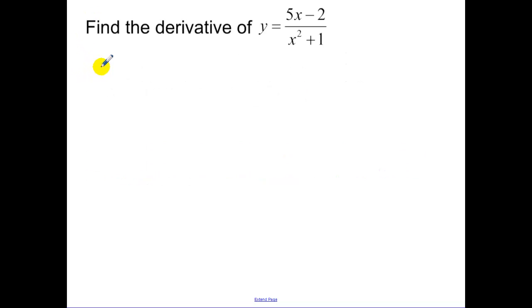Okay, I have a quotient here, so y prime, low d high, minus high d low. Draw a line, square the below.